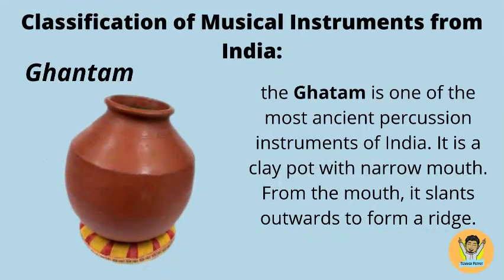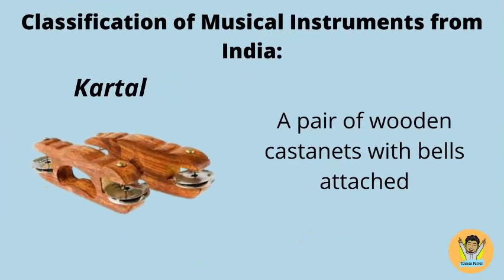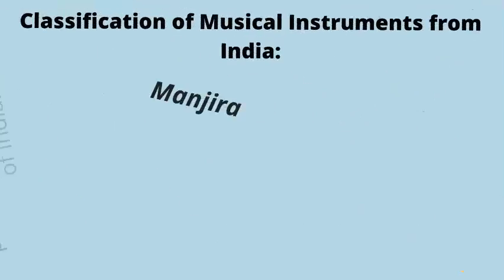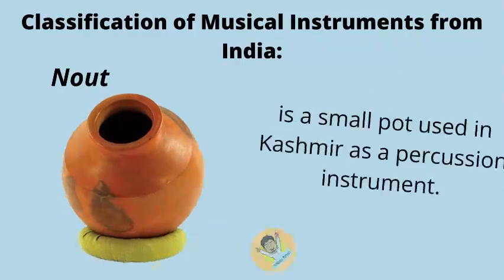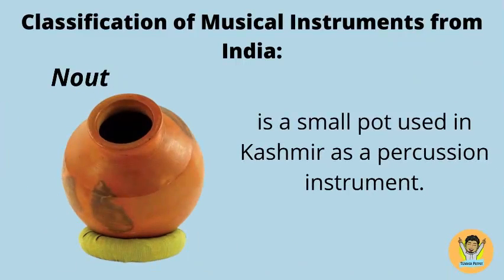The Gadam is one of the most ancient percussion instruments of India. It is a clay pot with a narrow mouth that slants outward to form a ridge. Cartel is a pair of wooden castanets with bells attached. Manjira, or hand cymbal, is a traditional hand percussion instrument of India. Naut is a small pot used in Kashmir as a percussion instrument.